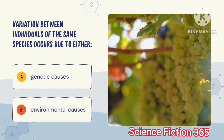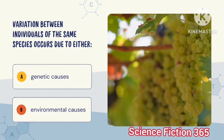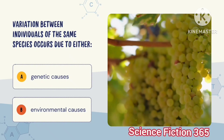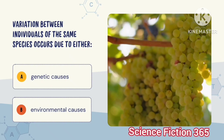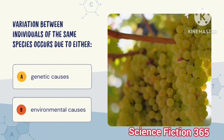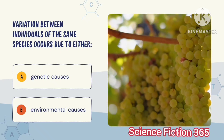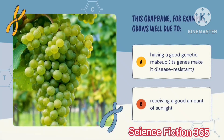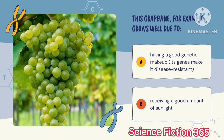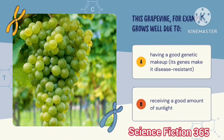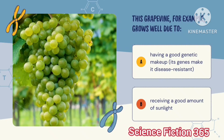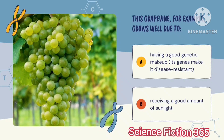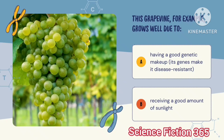Variation between individuals of the same species occurs due to either genetic causes or environmental causes. For example, a grapevine's growth due to having a good genetic makeup relates to genetic causes such as disease resistance, while receiving a good amount of sunlight is an environmental cause.